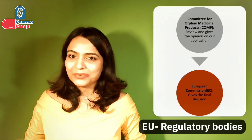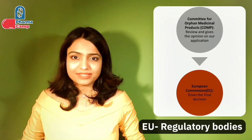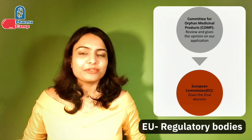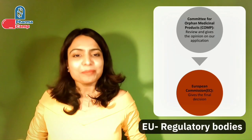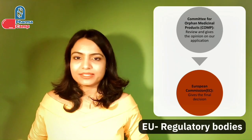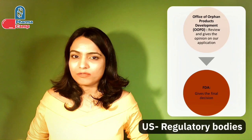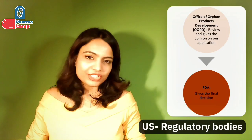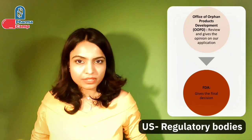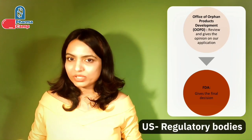The second comparison point is regulatory bodies. In the EU, two bodies are involved: first is COMP, a committee under EMA, and second is EC. The Committee for Orphan Medicinal Products (COMP) reviews the application and gives an opinion to the EC on whether the product should get orphan drug designation. The European Commission (EC) then gives the final decision. In the US, two bodies are similarly involved: the Office of Orphan Product Development (OOPD), equivalent to COMP, provides an advisory opinion, and the FDA, equivalent to EC, grants the final decision on orphan drug designation.